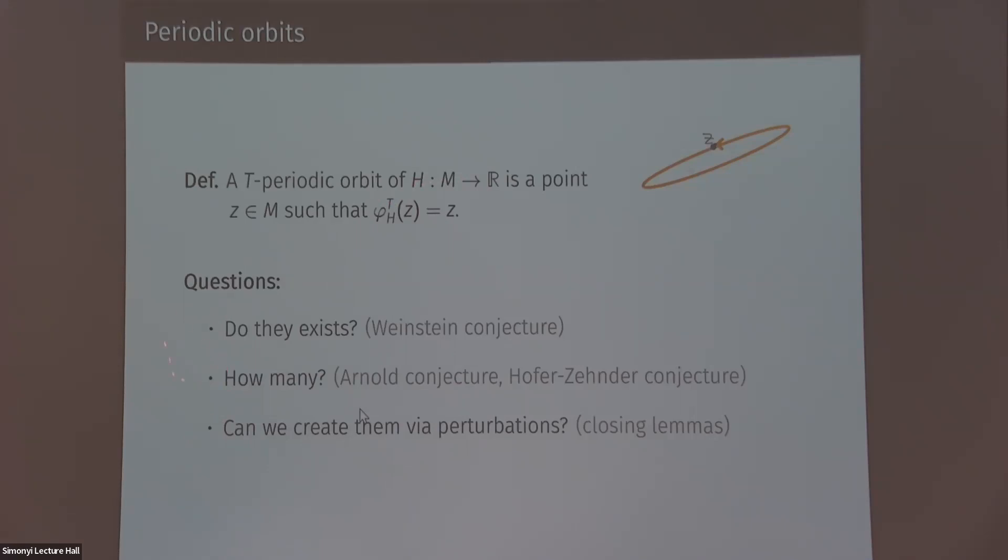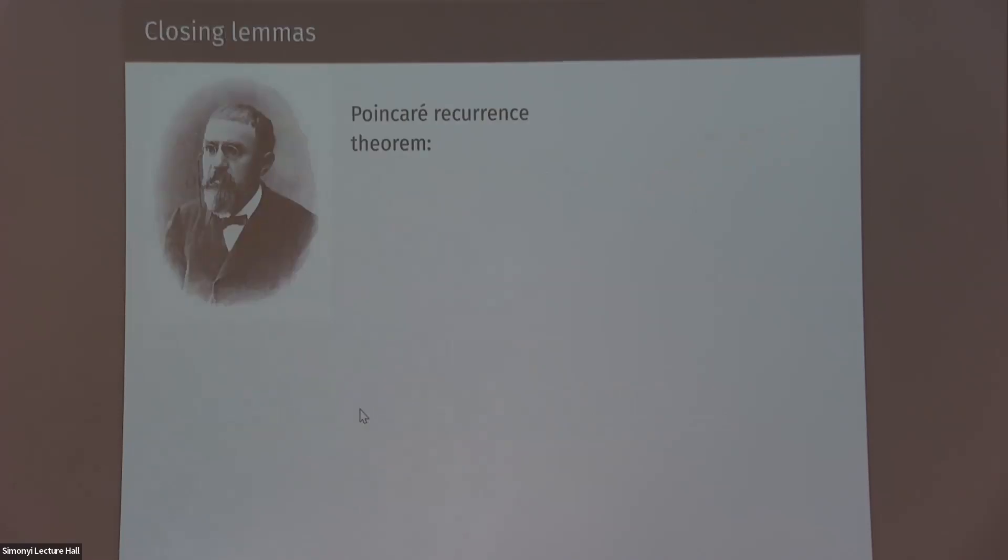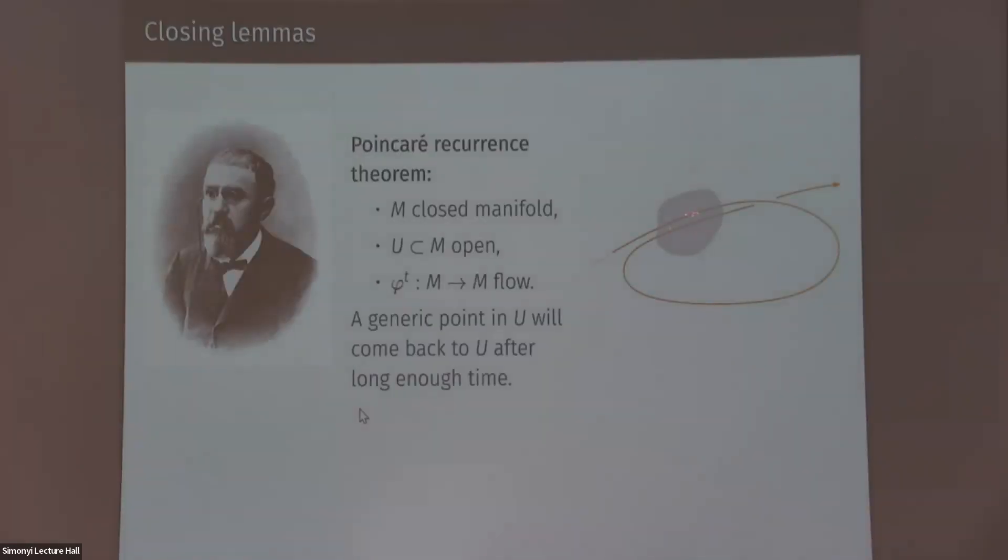So the first two questions are the subject of a lot of work in symplectic geometry. But today I want to focus on the third one, which was originally asked by Poincaré and is motivated by a famous theorem of his, which is Poincaré recurrence theorem. So I'm going to say Poincaré theorem in a symplectic setting, but it holds in much more general setting. So for us, suppose you have a closed manifold, symplectic manifold M. You have an open set. You can think of it as a small neighborhood of a point. And you have a Hamiltonian flow. The theorem will tell you that a generic point in this open set, if you just flow it with the flow, it will come back to the open set after some large enough time.